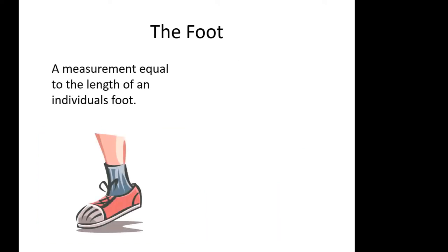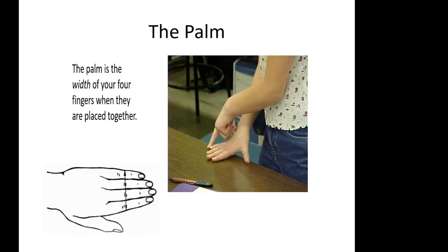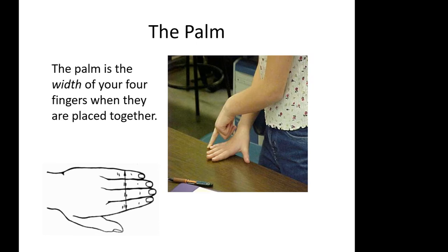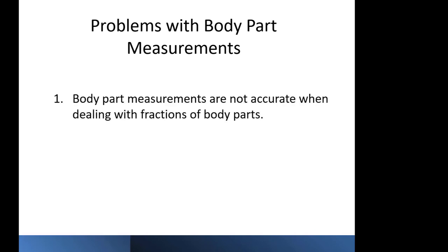The foot is another example of an ancient measurement unit — it is equal to the length of an individual's foot. King Henry the First standardized this measurement because his foot was 12 inches long. Another old measurement is the palm, which is the width of your four fingers placed together.